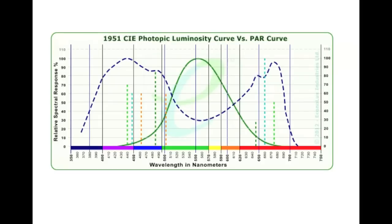This gets complicated when you combine the people curve — what people see — with what plants use, which is predominantly blue and red light. The plant curve is very different from the people curve, which is where we start talking about parlite for plants versus lumens for people.